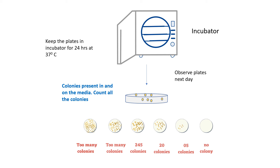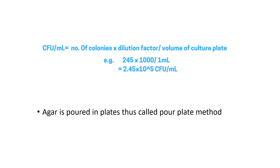Count all colonies in each plate and apply this formula: colony forming units per ml equals the number of colonies multiplied by the dilution factor, divided by the volume of culture plated. For example, a plate having 245 colonies with a dilution of 1 to 10 to the power of 3 gives a CFU value of 2.45 × 10^5 CFU per ml. Since agar is poured into the plate, this method is called the pour plate method.